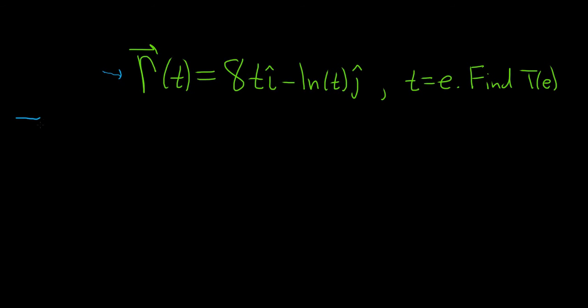So the formula for the unit tangent vector is big T of little t, and it's equal to the derivative of our vector-valued function divided by the magnitude of the derivative of the vector-valued function.